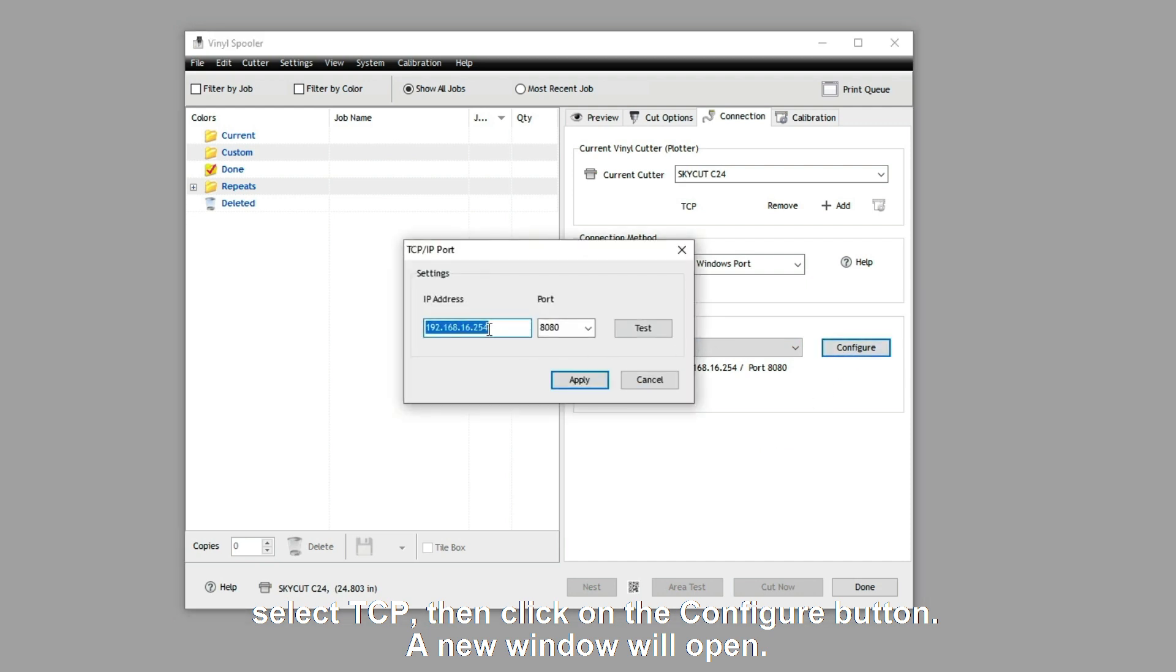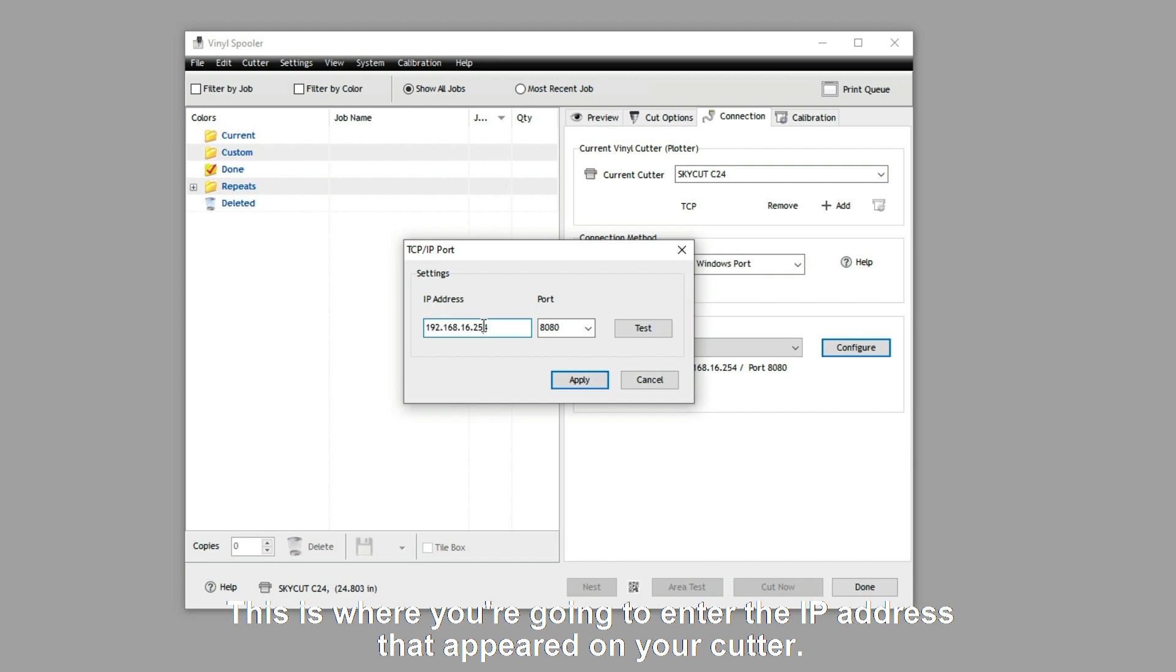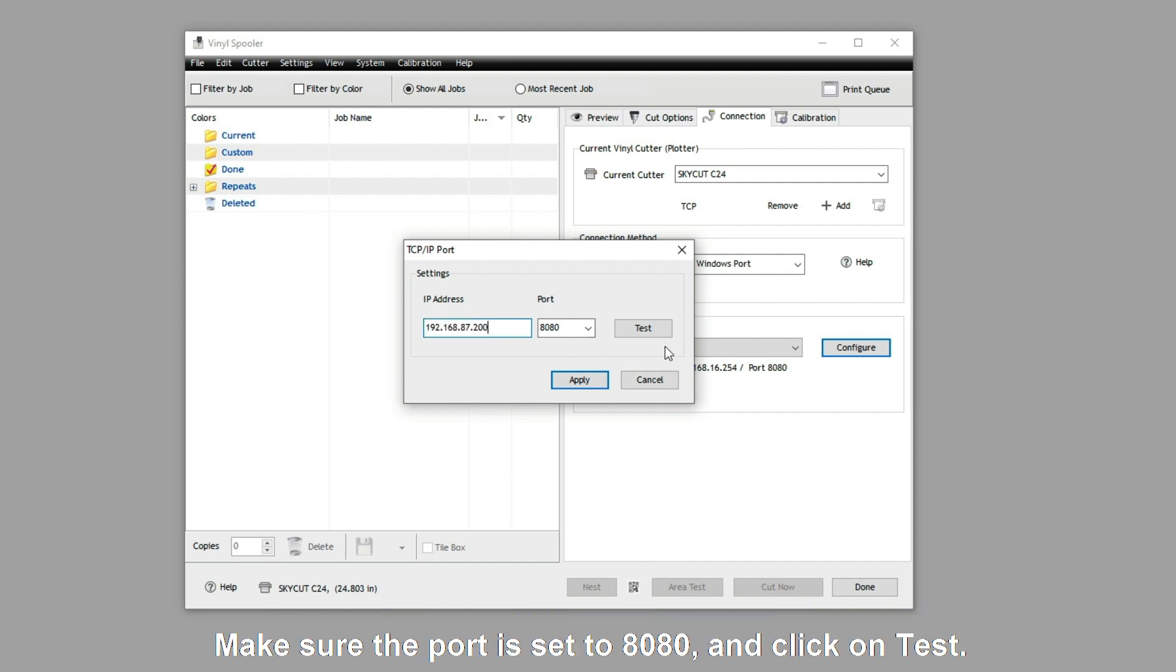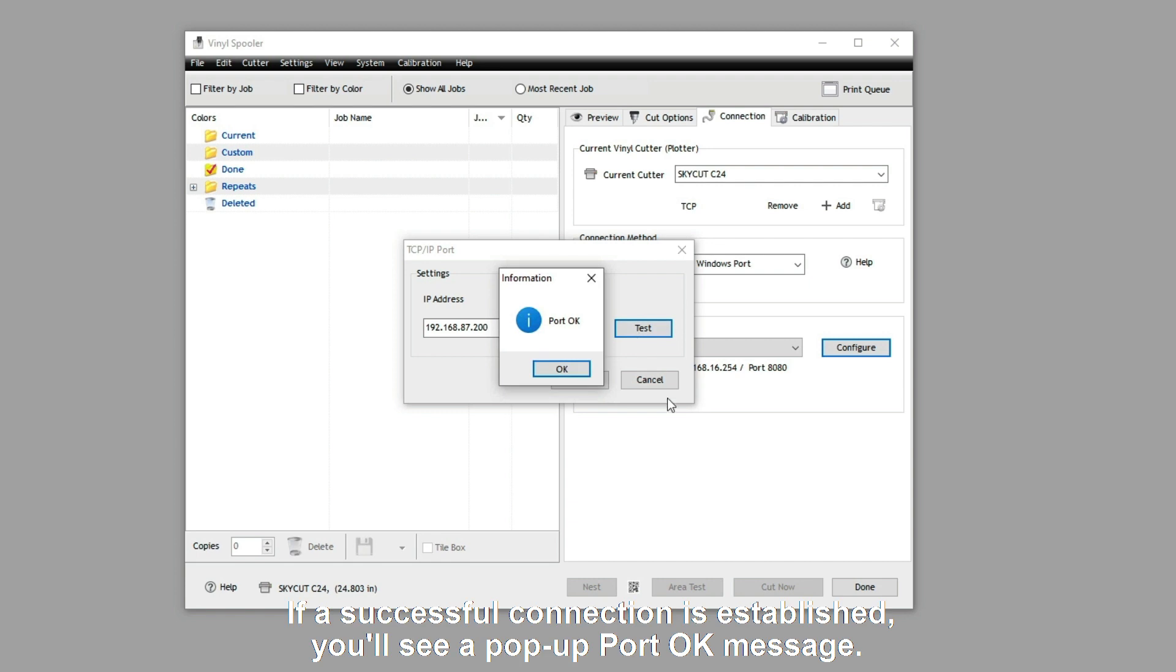A new window will open. This is where you're going to enter the IP address that appeared on your cutter. Make sure the port is set to 8080 and click on Test. If a successful connection is established, you'll see a pop-up port OK message.